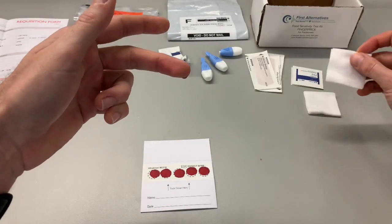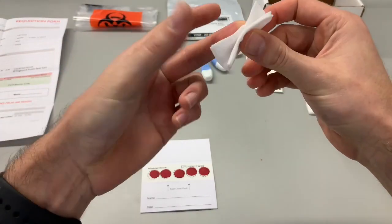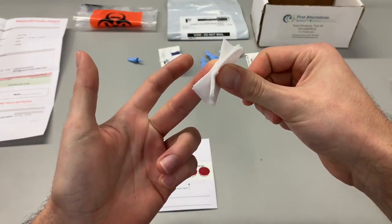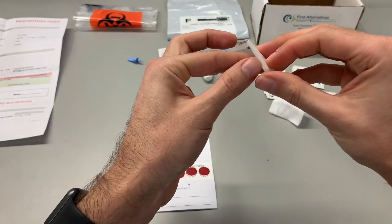After all five circles are filled, take a gauze pad and hold it onto the puncture site for a couple of minutes to ensure that the bleeding stops. Take one of the band-aids and place it around the puncture site.